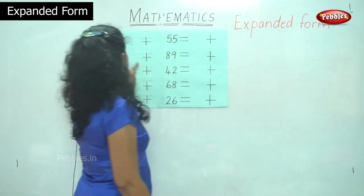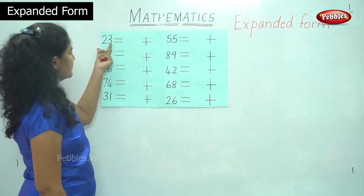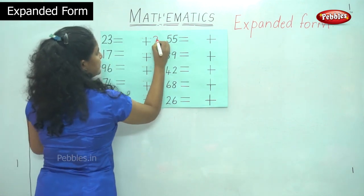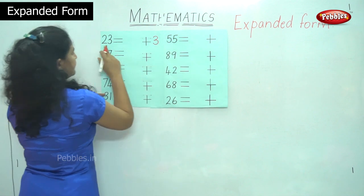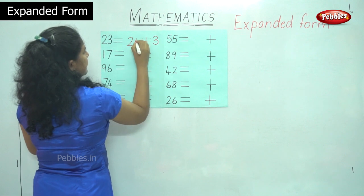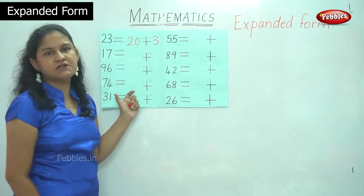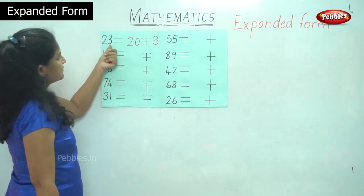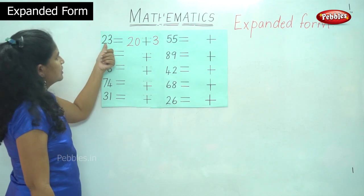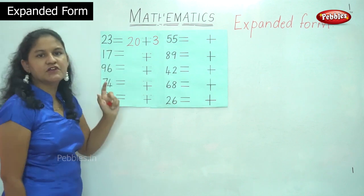I am going to do the expanded form for these ten numbers. For number 23, in the ones place I have 3, and in the tens place it is read as two tens, so I write it as 20. So 20 plus 3 is the expanded form of 23.